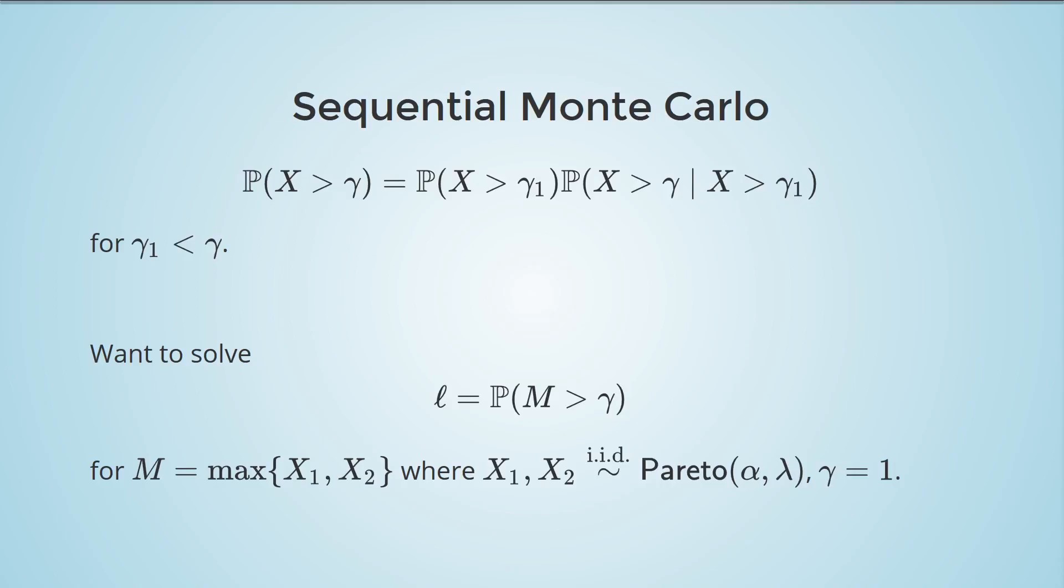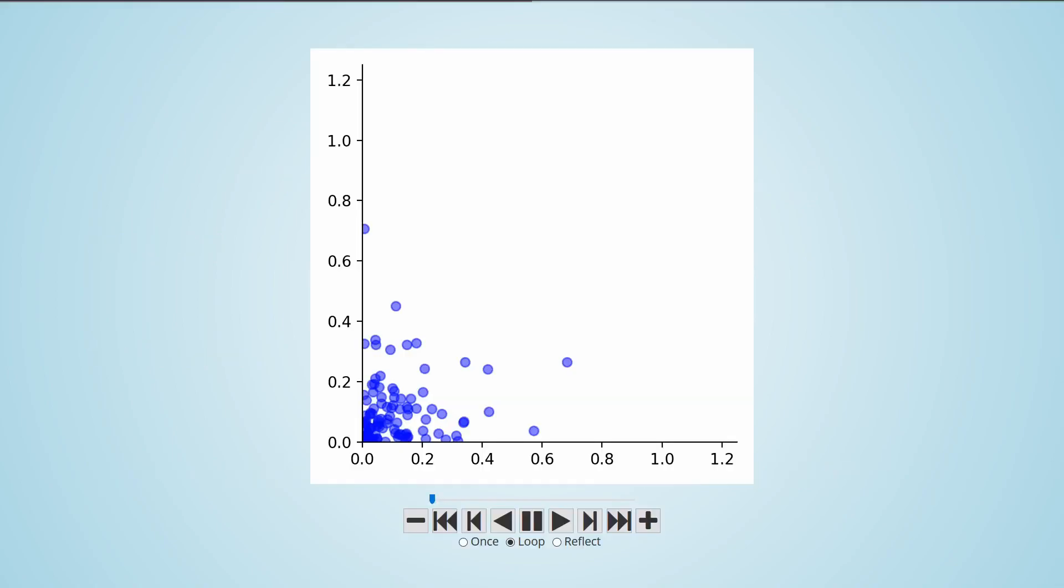Before getting to SMC, let's try to combine the identity above with Crude Monte Carlo. This scatter plot shows 100 X1, X2 pairs of Pareto variables. If we take a small threshold, like 0.1, we can make a Crude Monte Carlo estimate for the probability of M exceeding this threshold. We just count the number of pairs whose maximum value is above this small threshold and divide by the number of pairs, 100, to get 62%.